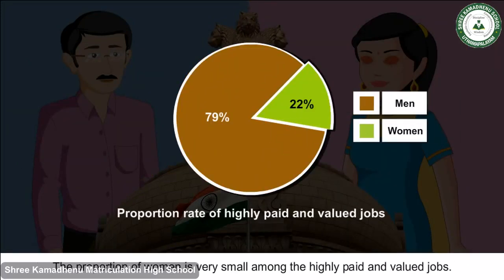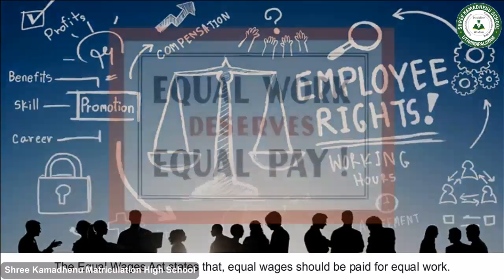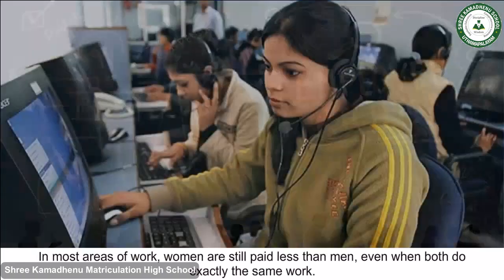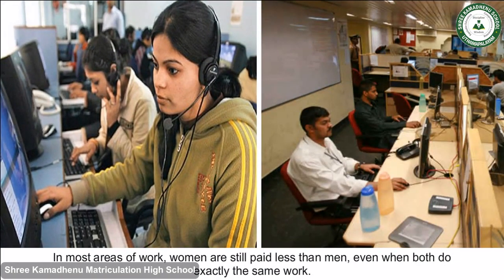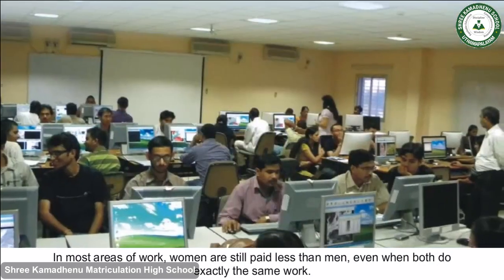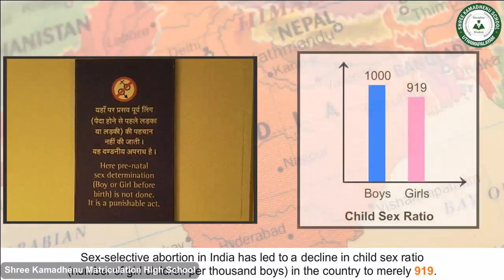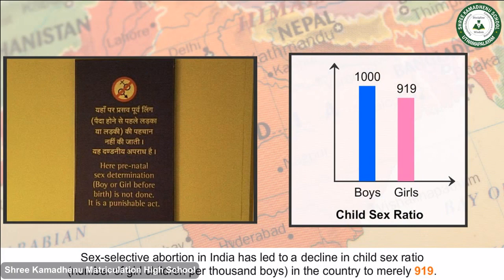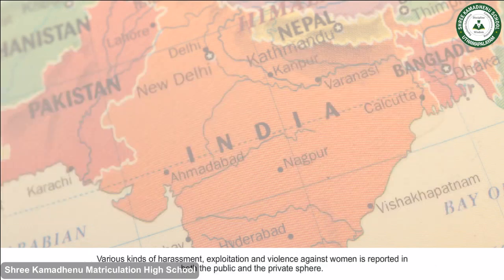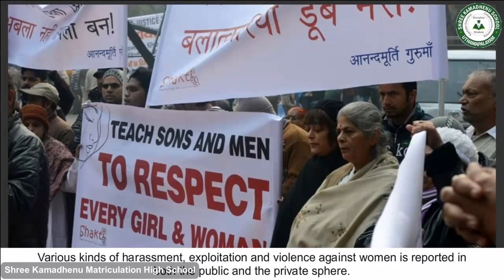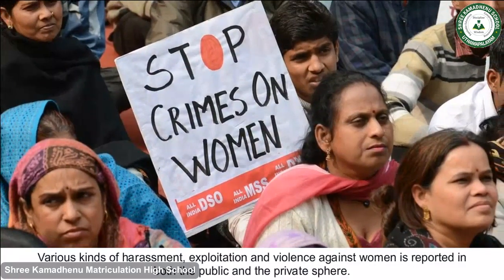The proportion of women is very small among the highly paid and valued jobs. The Equal Wages Act states that equal wages should be paid for equal work, but in most areas women are still paid less than men even when doing exactly the same work. Sex-selective abortion in India has led to a decline in the child sex ratio to merely 919 girls per thousand boys. Various kinds of harassment, exploitation and violence against women are reported in both the public and private sphere.